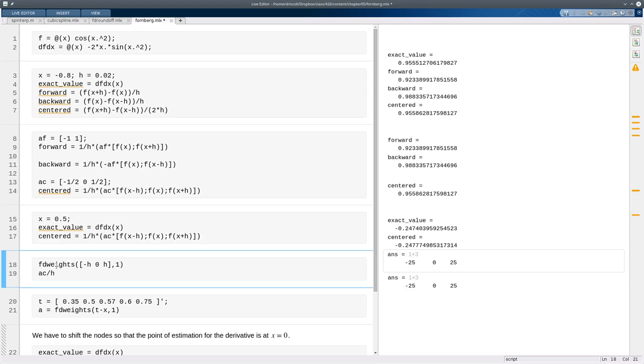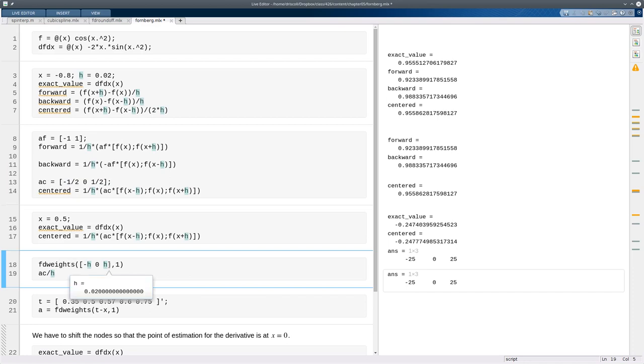The term weights is a little bit ambiguous because when the nodes are equally spaced, we generally use the values without h in them, and then we divide by h when we do the computation. But for general nodes, there's no such thing as a value of h anymore, so the numbers that come out from this would be called the weights. It's just a little bit of context dependence there.